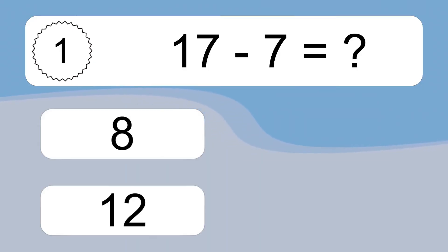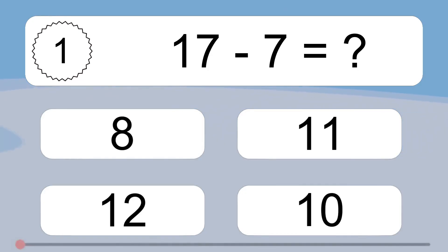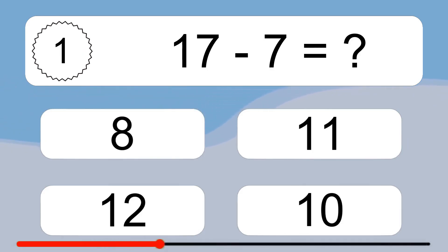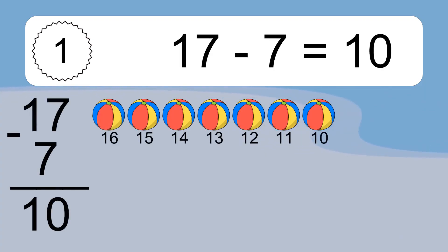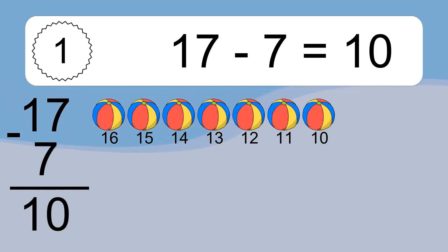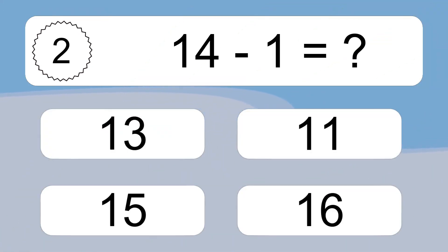17 minus 7 equals what? 17 minus 7 equals 10. Let's count it: 16, 15, 14, 13, 12, 11, 10.